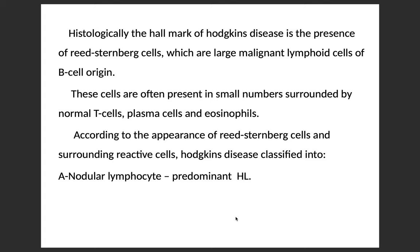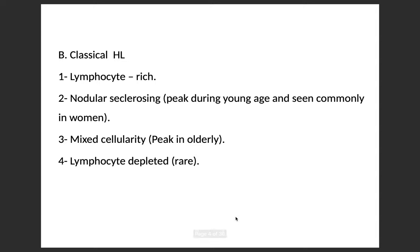The first type is nodular lymphocyte predominant Hodgkin's disease. The second type is called classical Hodgkin's disease, which constitutes several subtypes including lymphocyte rich, nodular sclerosing — which peaks during young age group and is seen commonly in women — mixed cellularity, more common in elderly, and lymphocyte depleted, which is rare.